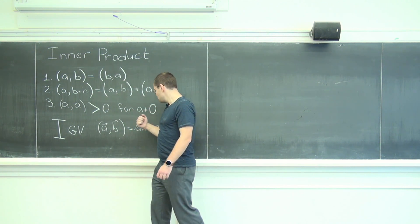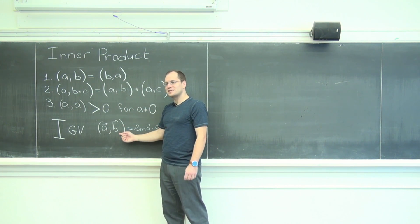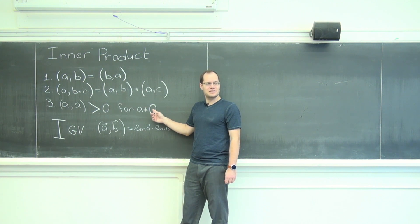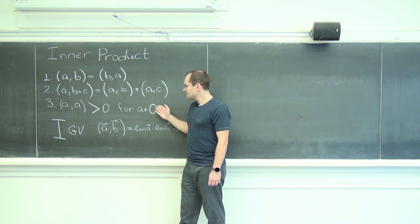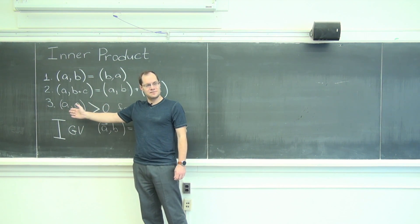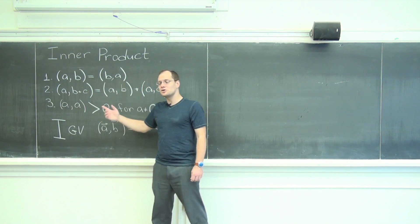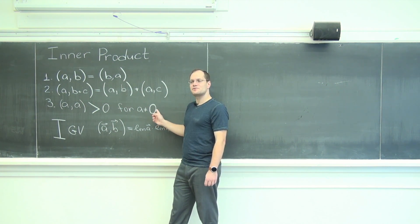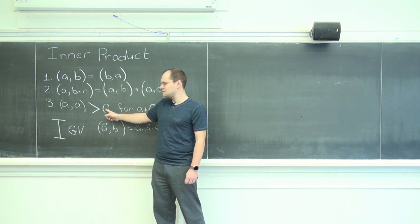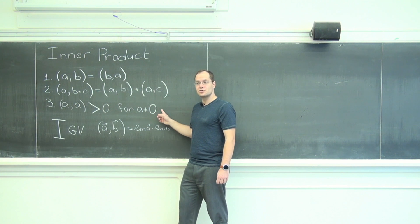Because when you dot a vector with itself and it's a non-zero vector, the comment that I made off camera is that this last condition, the positive definiteness condition, is good in that it has the symbol zero in it twice. But it stands for two different objects. This is zero, the number, and this is zero, the vector.